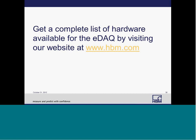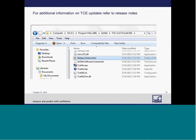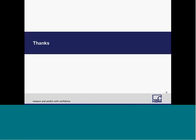Today I only went over a few of the changes to the EDAC hardware and software over the past few releases. For a complete list of hardware available for the EDAC, please visit our website at www.hbm.com. For additional information on TCE updates, please refer to the release notes included in every TCE software package, which can be located in Program Files, SOMAT, and the TCE folder for the version you're using. Thank you for joining us today.